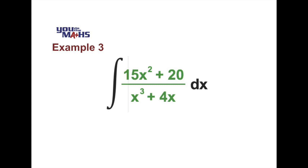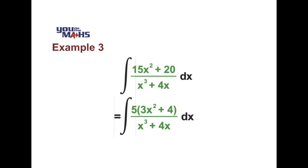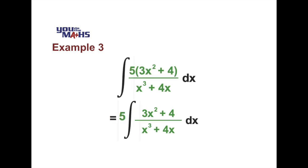But if we do go through the process of factorizing, we'll see that the top line factorizes to 5 outside of 3x squared plus 4. We can take that 5 outside the front of the integral.